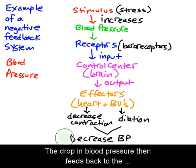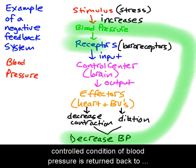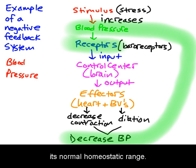The drop in blood pressure then feeds back to the baroreceptors, which detect this decrease, and the controlled condition of blood pressure is returned back to its normal homeostatic range.